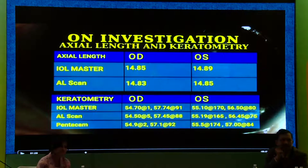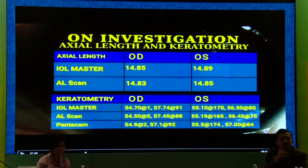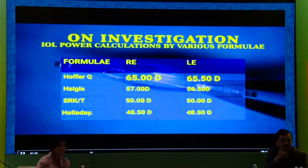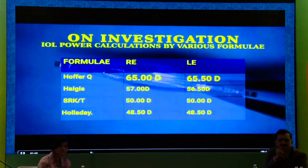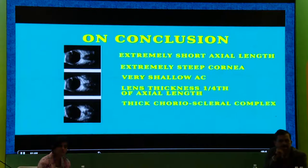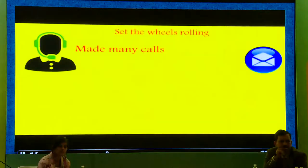I tried multiple formulas — it just said out of normal range. You can't enter a 57 diopter cornea; you try as many formulas as you want. The axial length in the right eye was 14.84, and the IOL power range came out to 49 to 65 diopters. So what are we going to implant? This was an extremely steep cornea and I tried everything.